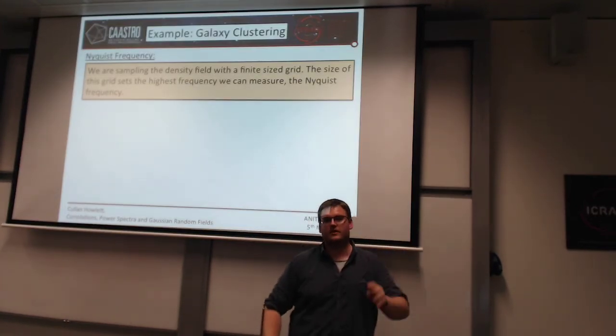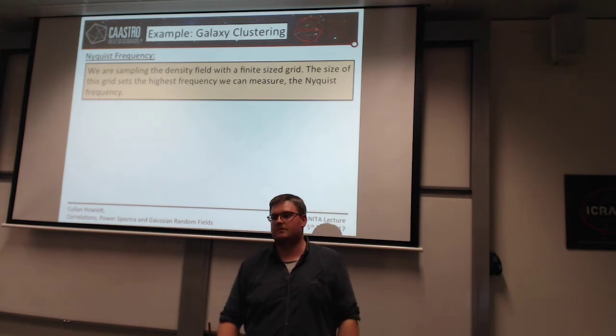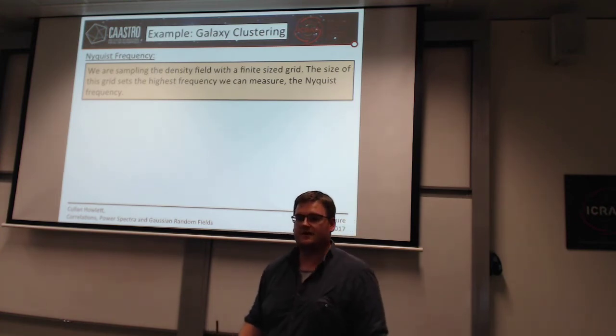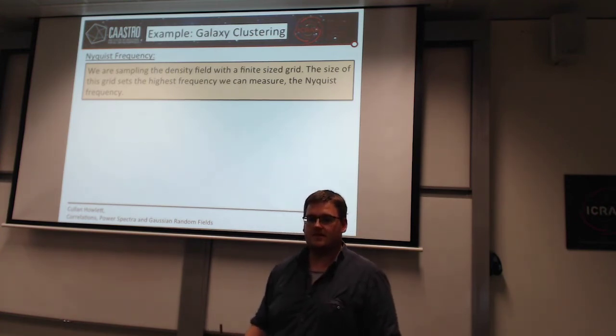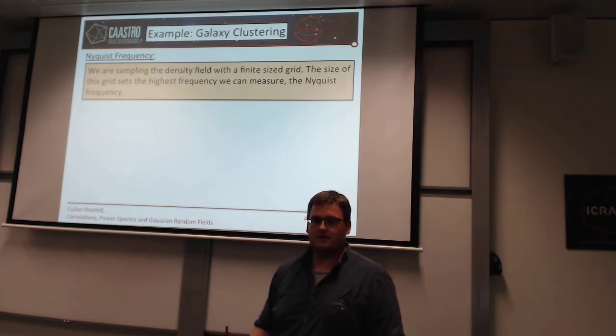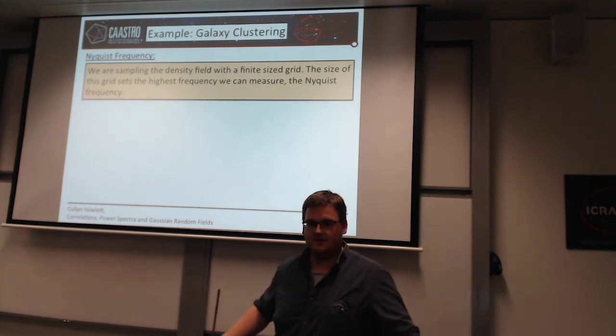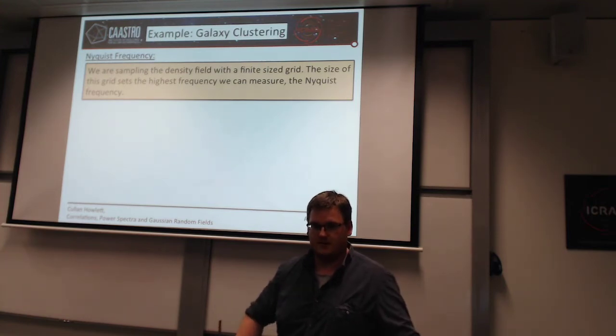If you imagine trying to do a three-dimensional grid with 2000³ cells, each one as a floating point number — 2000³ times four bytes — you're instantly running out of memory. That's already over 64 gigabytes of RAM. This is a fundamental limitation that will affect any discrete Fourier transform you do.